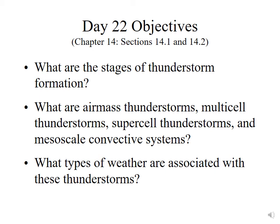Welcome to Atmos 5000, Day 22. Our objectives today are being pulled from Stull Chapter 14, Sections 14.1 and 14.2. We're going to be doing a lot of qualitative stuff today, mostly focusing in on the stages of thunderstorm formation, the different types of thunderstorms that are out there, and the types of weather that are associated with these different types of thunderstorms.